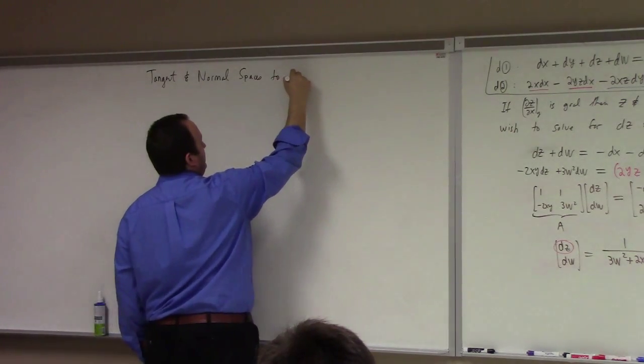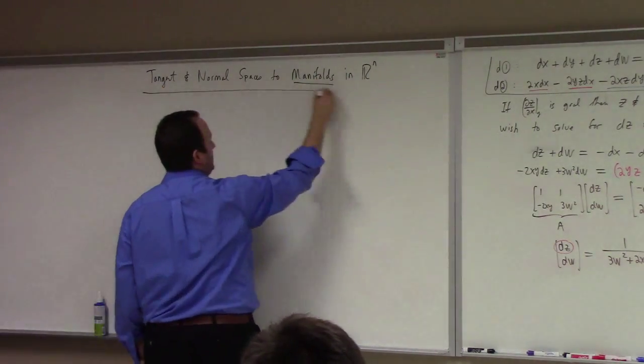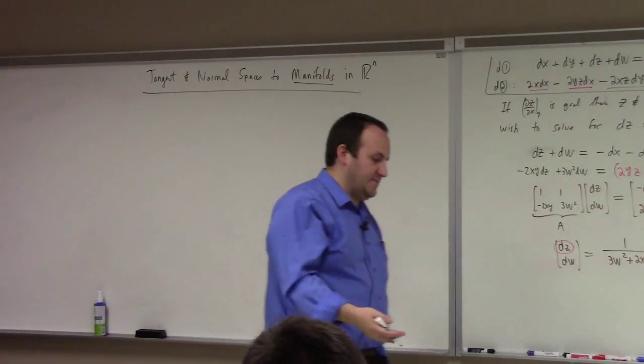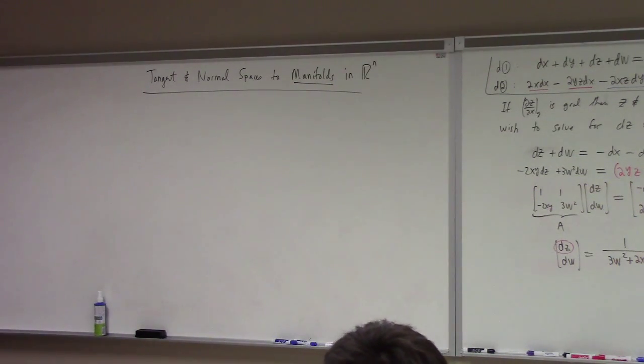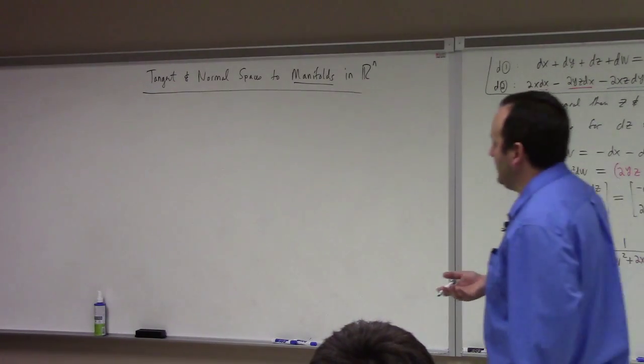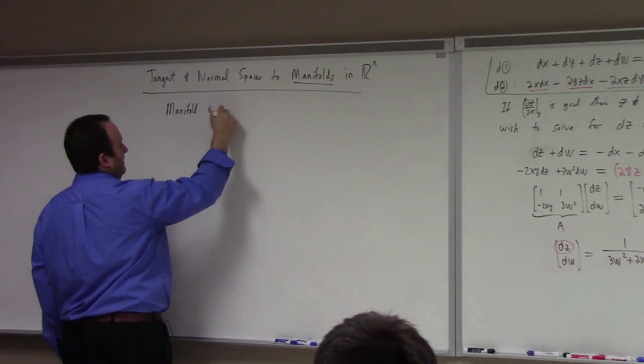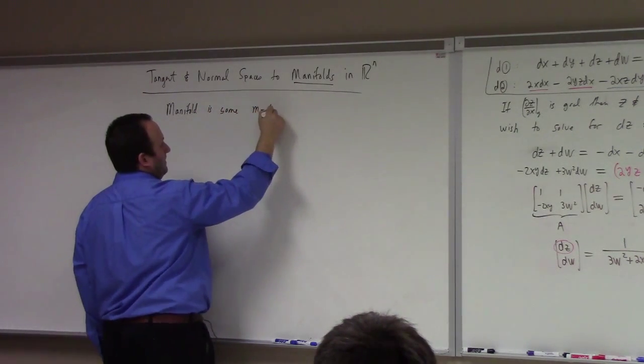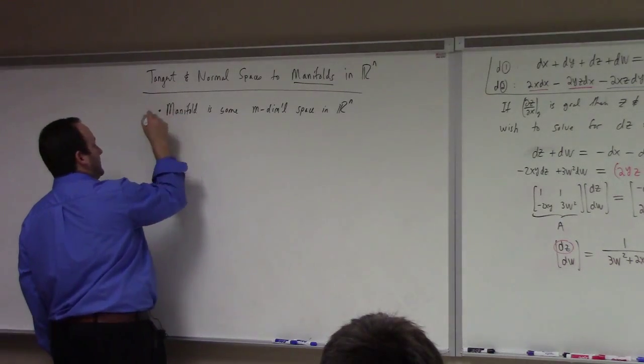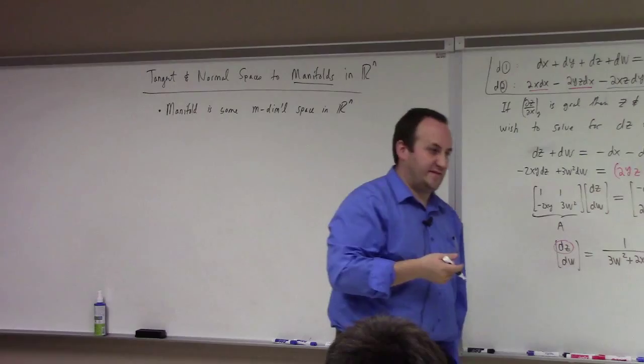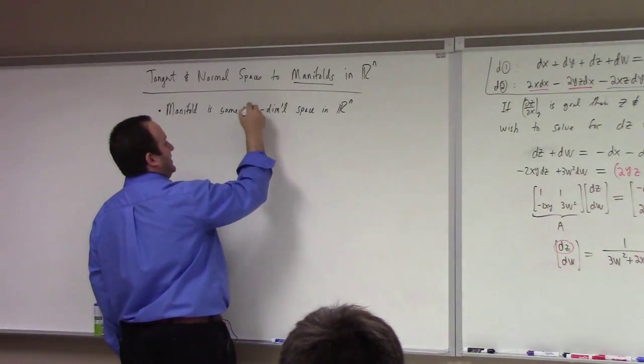So I'm going to show you manifolds in Rn. What's a tangent space? What's a normal space? But first, what's a manifold in Rn? Let me try to describe it for you. Basically, here's the idea. A manifold is some, let's say, M-dimensional space in Rn is a preliminary description I would give of it. That begs the question, what do we mean M-dimensional space? Let me call it K-dimensional in order to bring better contrast to K and N. So it's a K-dimensional space.